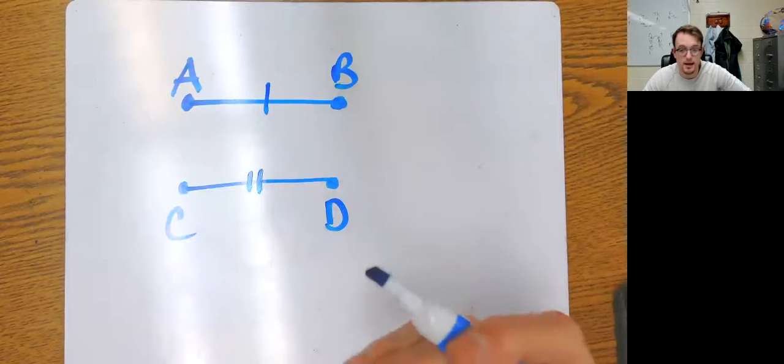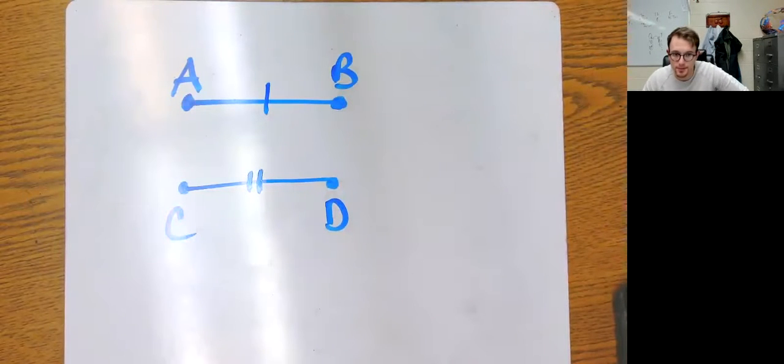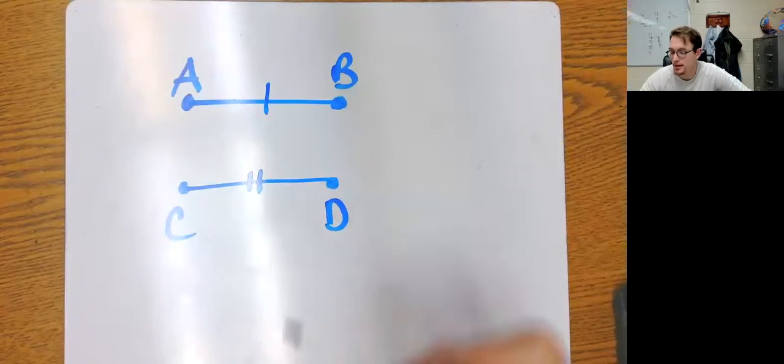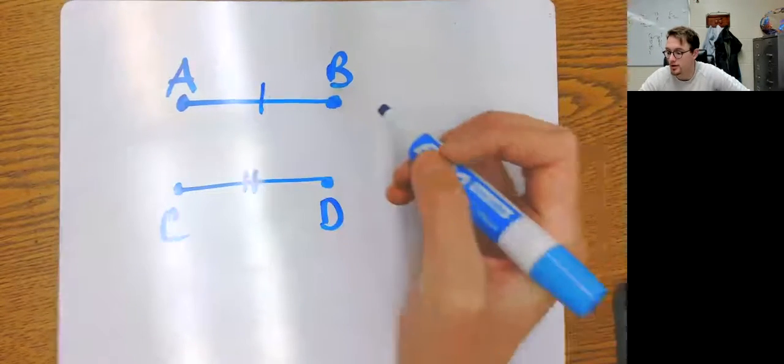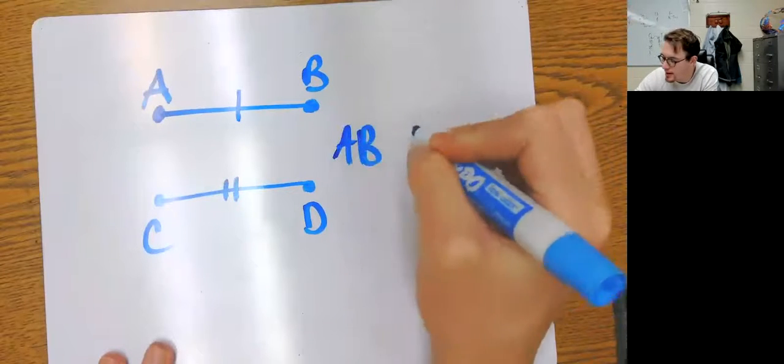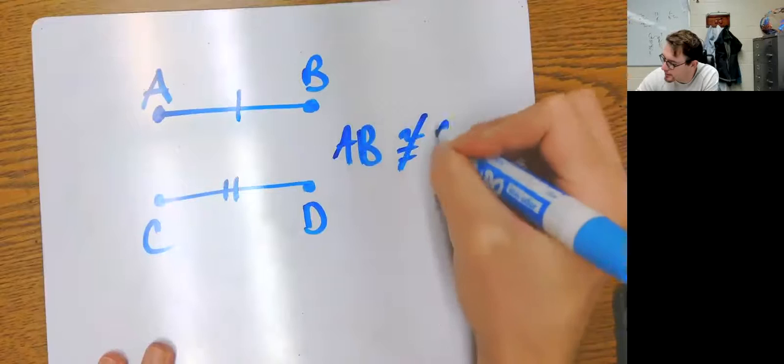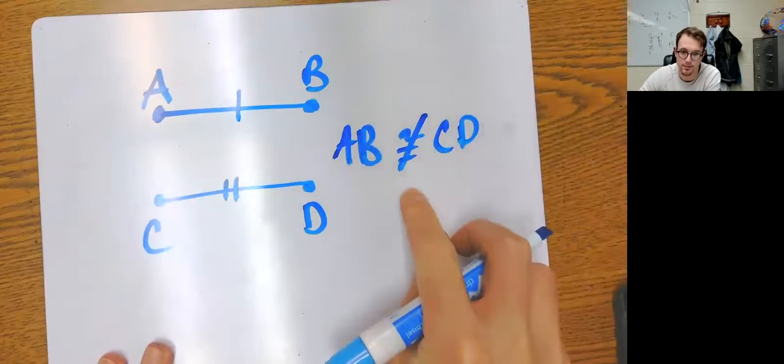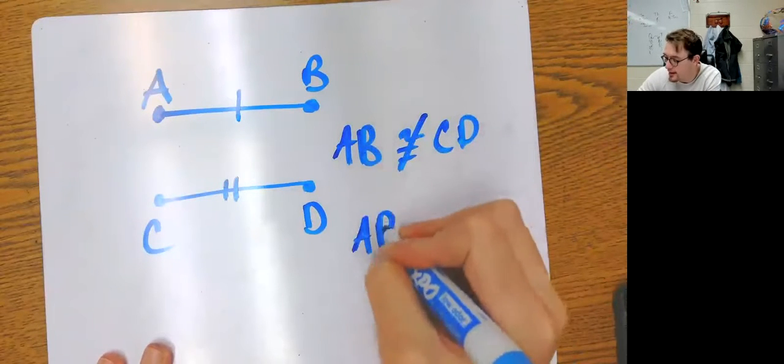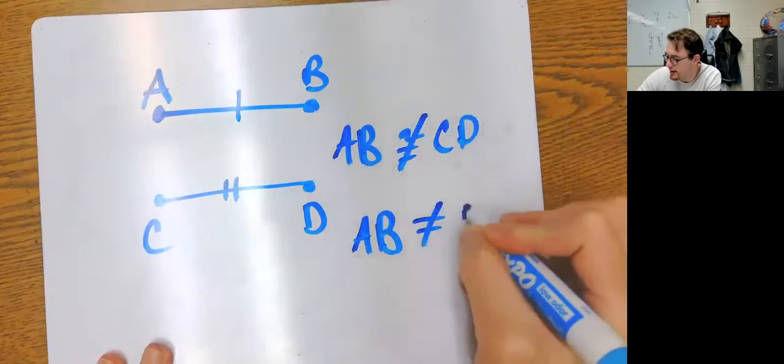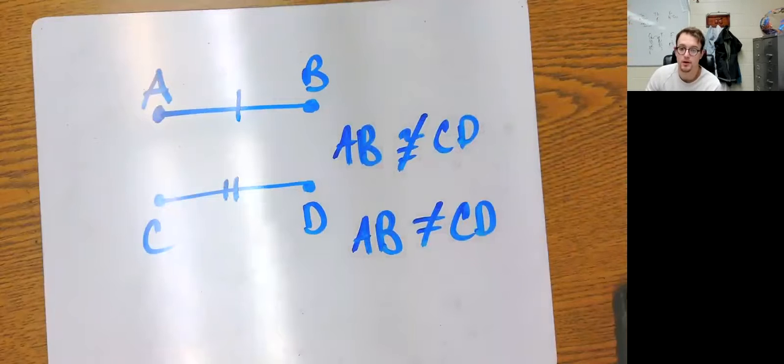My question then in this case would be: are these congruent? No. They look like they're the same length, I drew them so they look like they're the same length, but they're not congruent because this has one tick mark and this has two tick marks. So in this case, AB would not be congruent to CD, which therefore means AB is not equal to the length of CD. Because if they're not congruent then they're not equal.